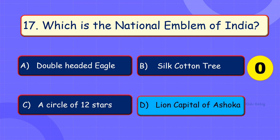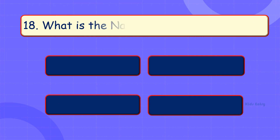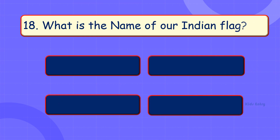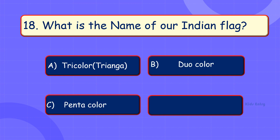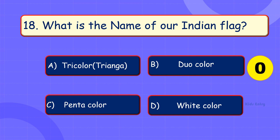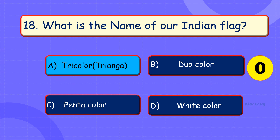What is the name of the Indian flag? A. Tri-color. B. Dio-color. C. Pentacolor. D. White color. Answer is Option A: Tri-color.